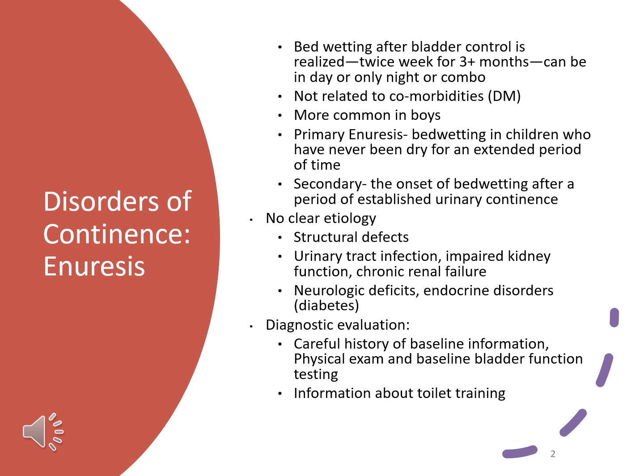There is primary enuresis, which is defined as bedwetting in children who have never been dry for an extended period of time — children who have not been potty trained for whatever reason. And then secondary incontinence, which is usually the one we would see in the doctor's office, means that onset happened after a period of established urinary continence.